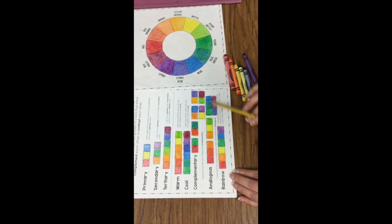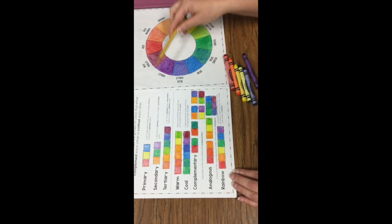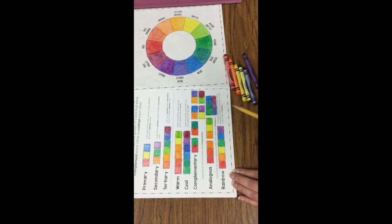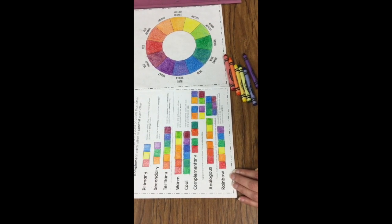you can change them to fit your project, as long as they are right next to each other on the color wheel, and then lastly, your rainbow colors.